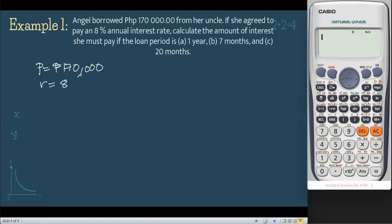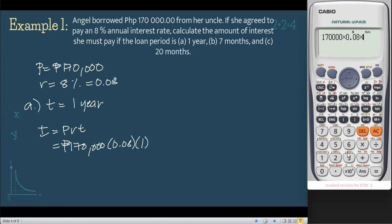We also have the rate, 8%, and 8% in decimal is 0.08. For letter A, our time is equal to 1 year. Using our formula, since we're finding the amount of interest, I equals PRT. That will give us $170,000 times 0.08 times 1. Using our calculator, that will give us $13,600.